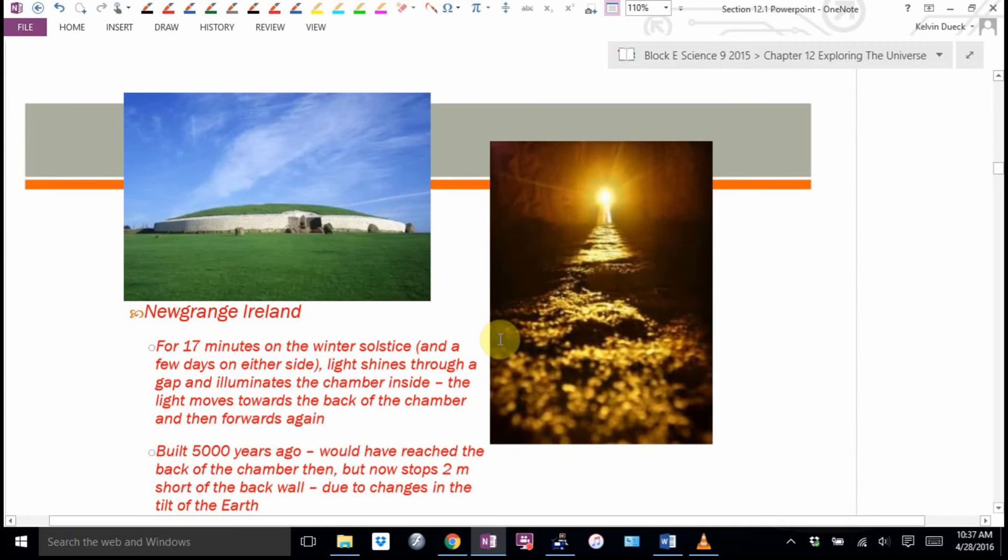In Newgrange, Ireland, there is this building here. For 17 minutes on either side of the winter solstice, the longest day of the year, the light shines through a gap and it illuminates the chamber inside. The light moves towards the back of the chamber and forward again. It was built about 5,000 years ago. Now it stops about two meters short of the back wall. And this is due to the fact that the earth's tilt has changed ever so slightly over 5,000 years.